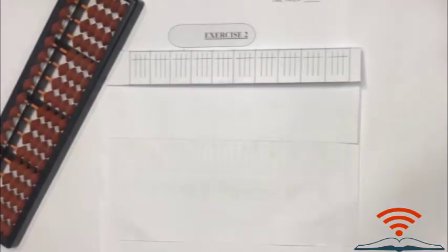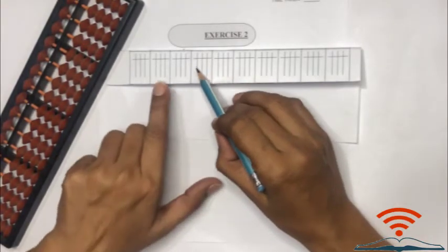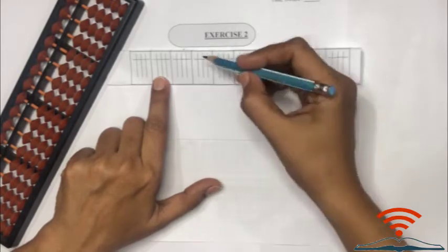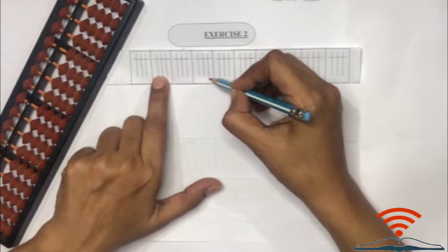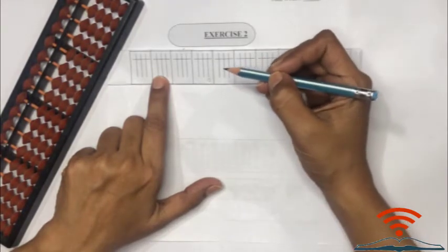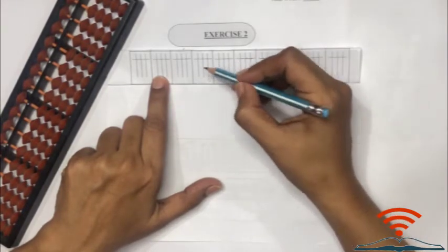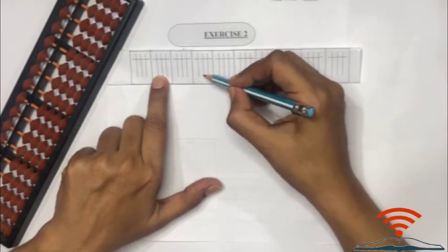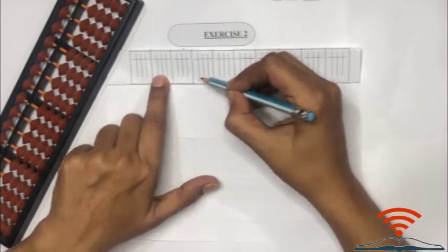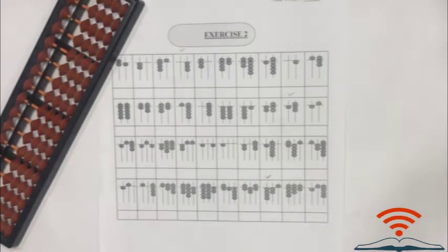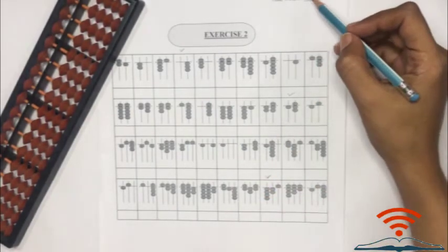In our today's lesson, we'll try to understand how to read beads in numbers. Here we can see digit rods. We assume that the rod at right side is home digit rod that represents ones. If we move towards left side, the rod present here represents tens and then hundreds.